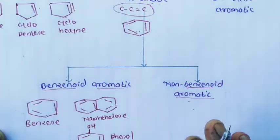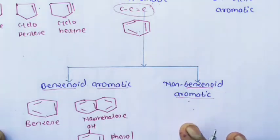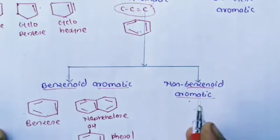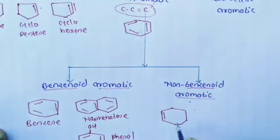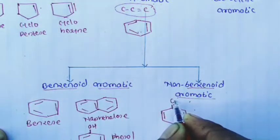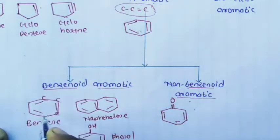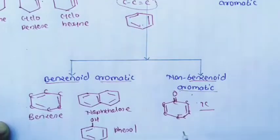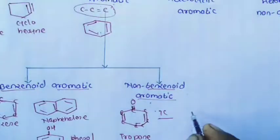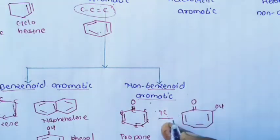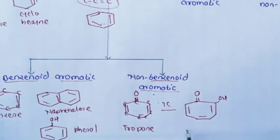In non-benzenoid aromatic compounds, the compound contains alternating carbon-carbon single and carbon-carbon double bonds, but the benzene ring is absent. For example, tropone has alternating carbon-carbon single and double bonds with an oxygen attached, but its ring contains 7 carbon atoms instead of 6, so it is not a benzene ring. Tropolone is another example of a non-benzenoid aromatic compound without a benzene ring.